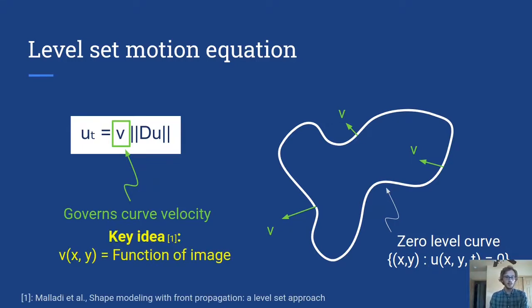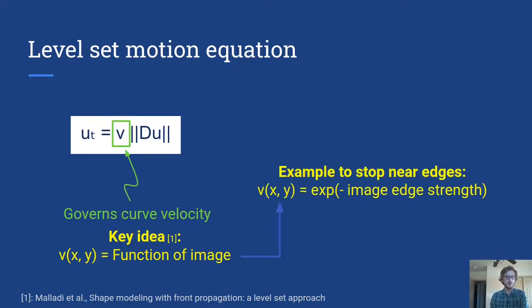So the key idea from Malladi and Sethian from a paper back probably I think in 1996 or 1995 is that we can let this velocity function be a function of the image itself. So for example you could say well let's make the velocity large when you're not near image edges but then when you get close to an edge make the velocity small. So if we take something like the exponential of the negative of image edge strength that's going to be a velocity that is small when it gets near edges.